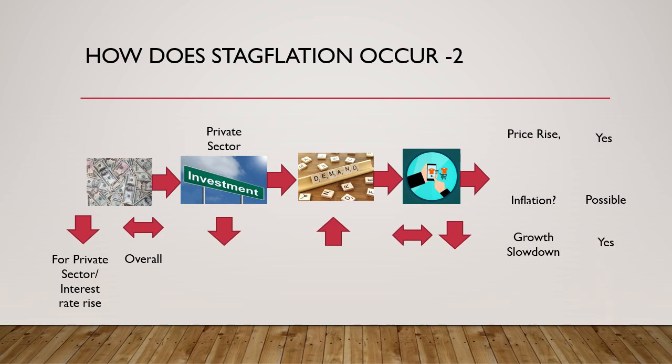Looking at this scenario: overall credit in the economy is either the same or slightly increasing, demand is increasing, but supply is most likely coming down due to lack of private sector investment. Hence price rise and inflation are possibly rising, growth is certainly coming down due to lack of new supply, and employment opportunities are falling — so stagflation is hitting the economy. We have now seen two scenarios where stagflation occurs: one where the central bank intervenes following a supply shock, and one where the government increases its fiscal deficit.